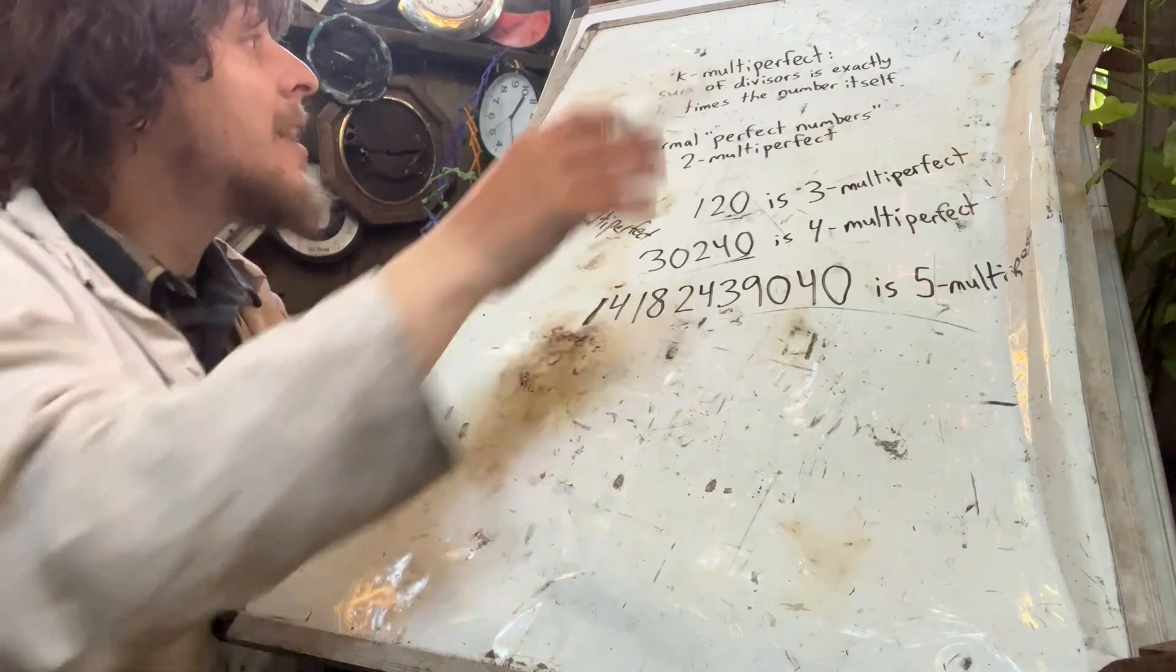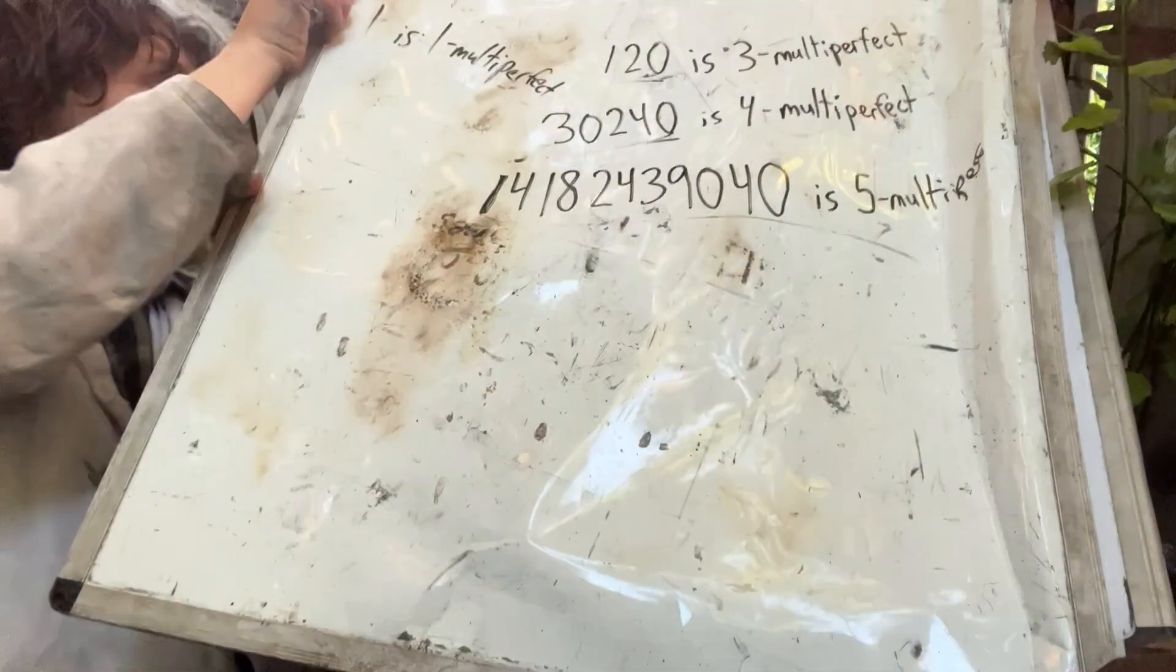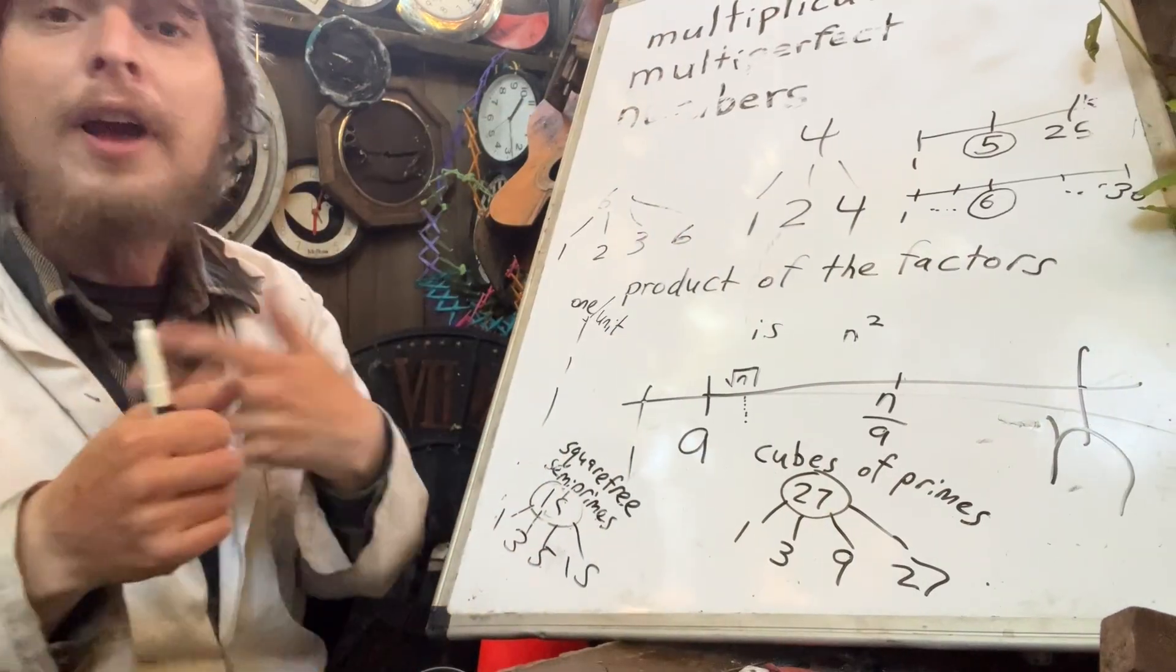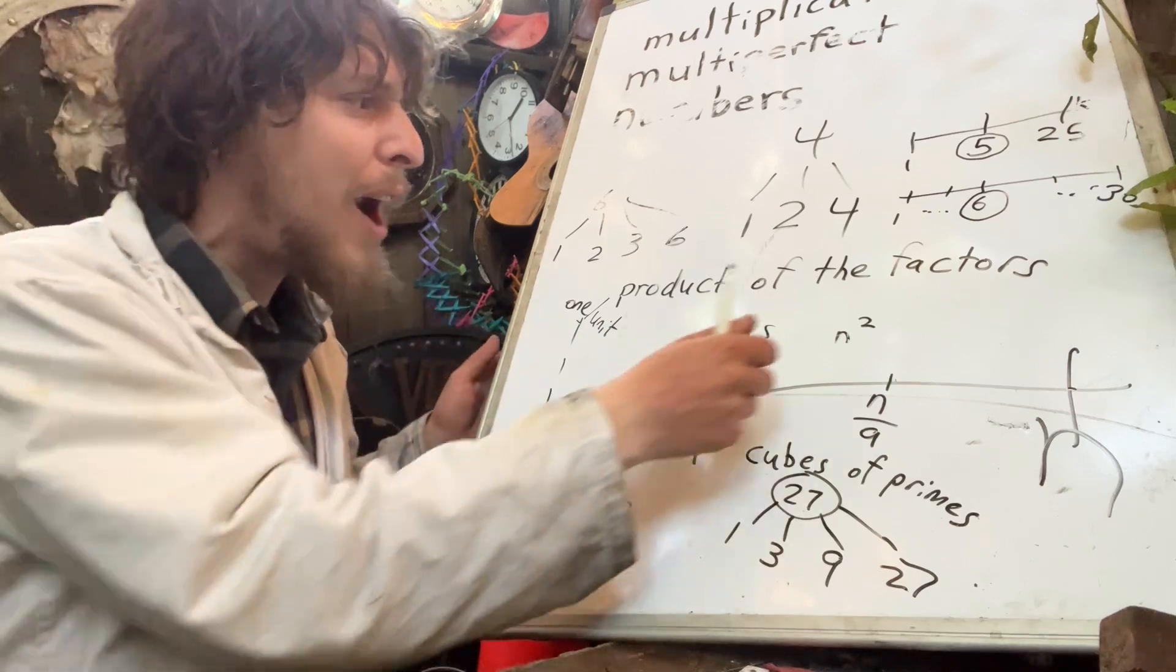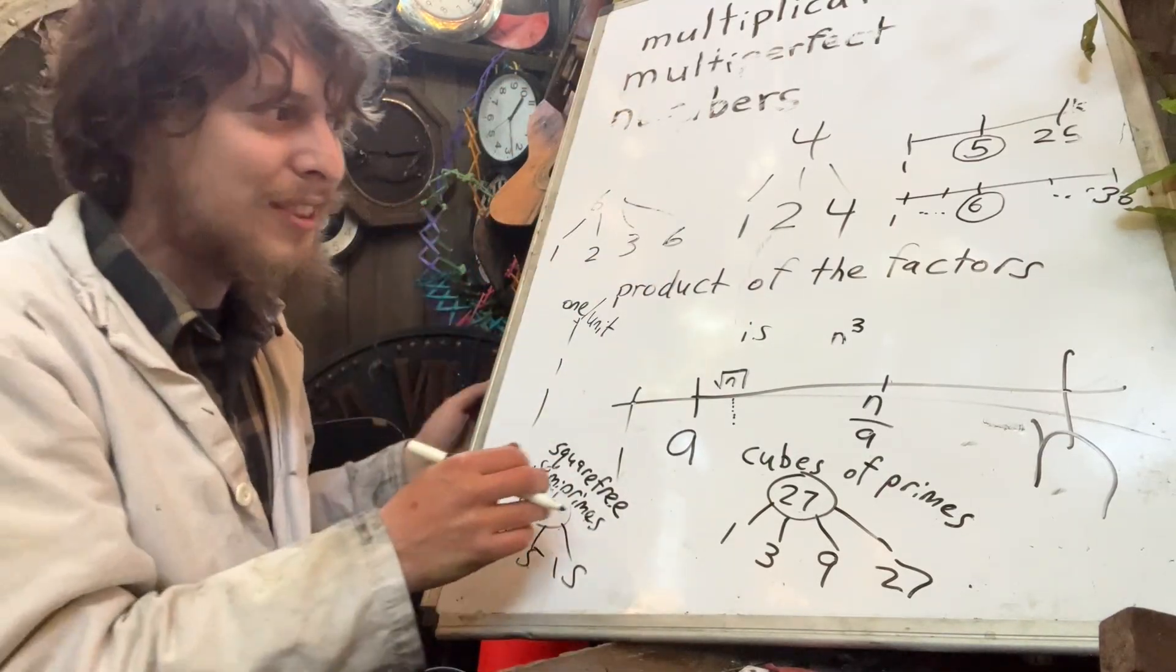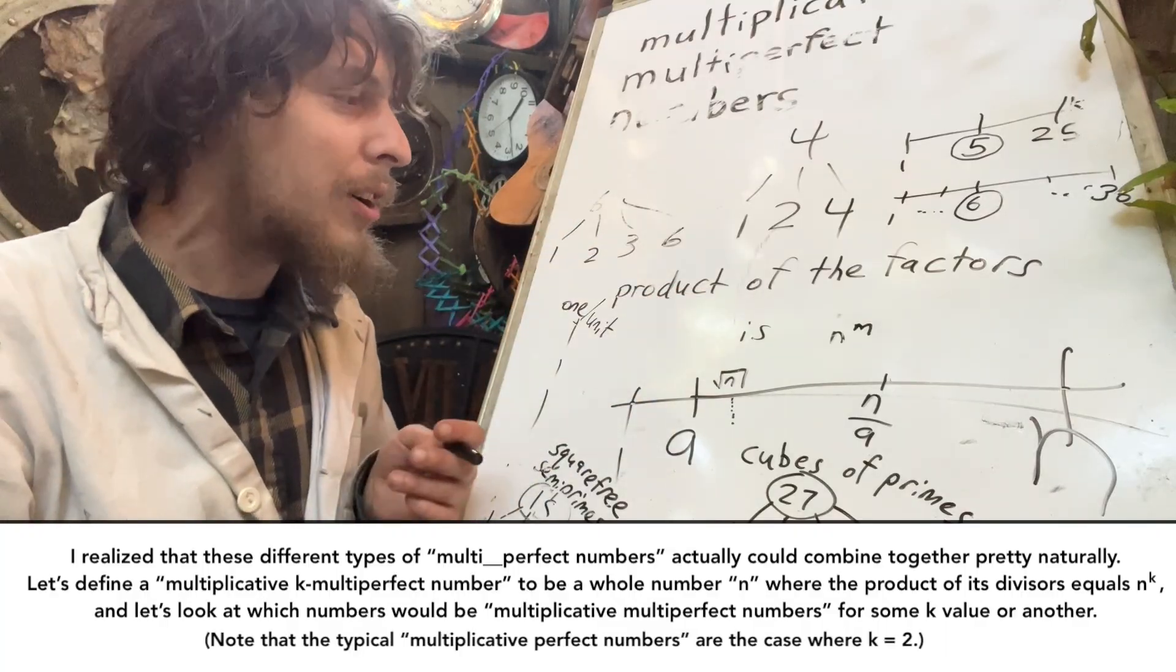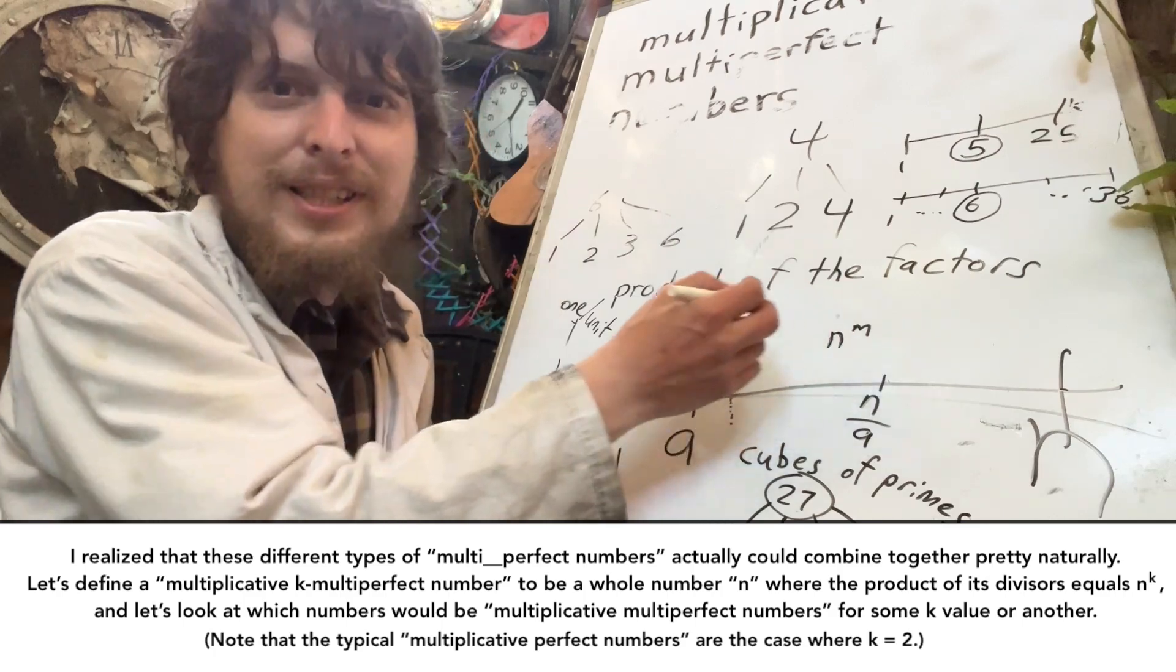Now with these, we had the sum of the divisors being some amount times the number itself and the amount didn't have to be two, we allowed other amounts. So here, the equivalent way of upgrading this would be instead of saying the sum of the factors, we're saying product of the factors still to be multiplicative. But then instead of saying some amount times that n, it's that n to some amount. So we could have that cubed if we were looking at the three multiplicative multi perfect numbers in the way I've defined that combination, or we could go further. And we really could have some m up there that's some whole number that's a level that we may wonder, do numbers of that sort exist ones where the product of the factors equals the number itself to that specific constant we've chosen.